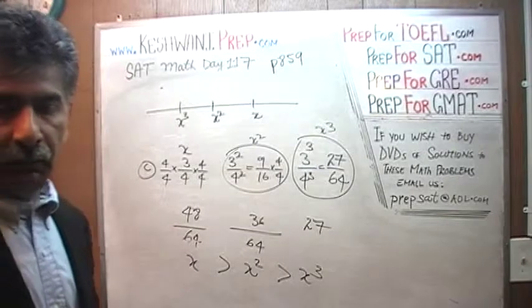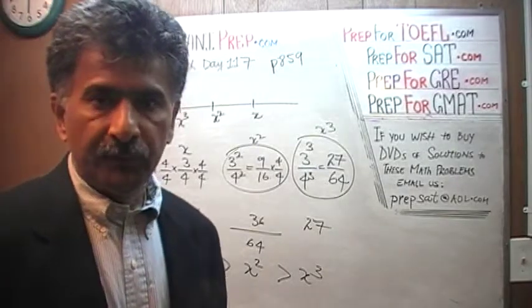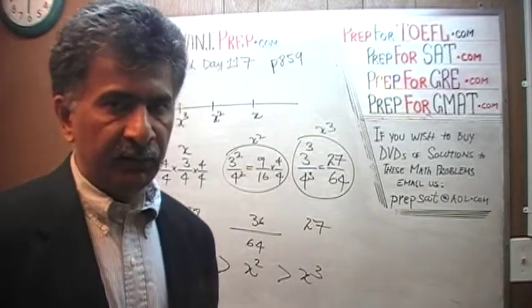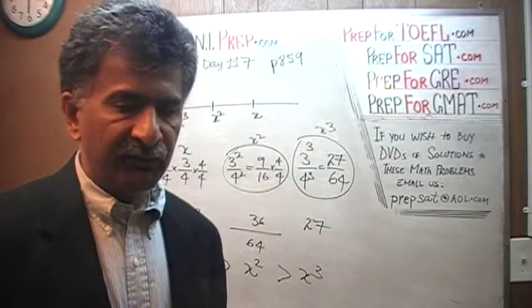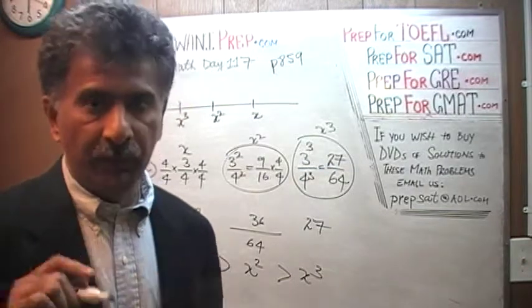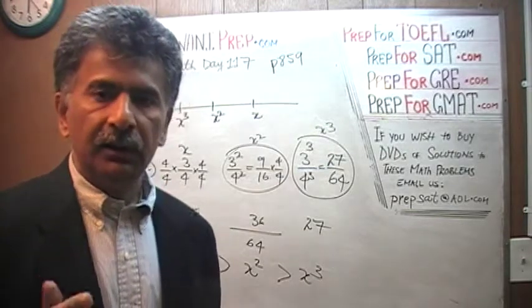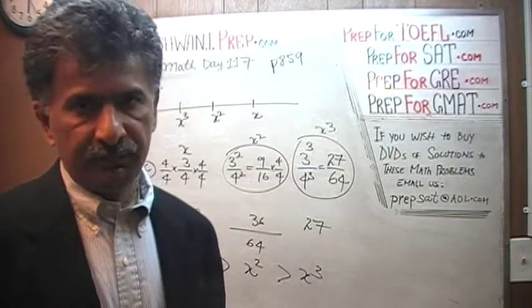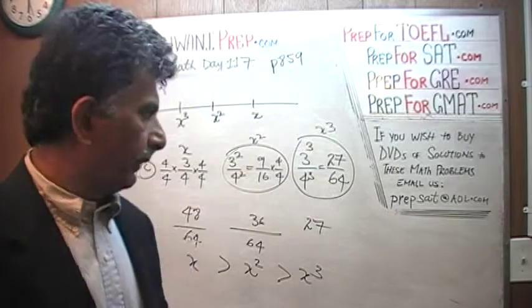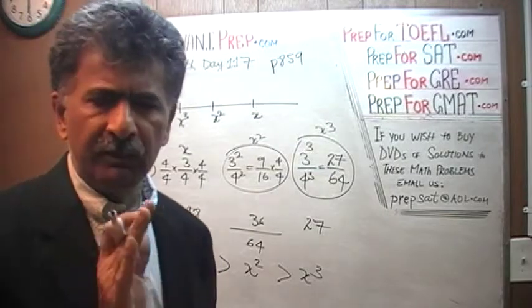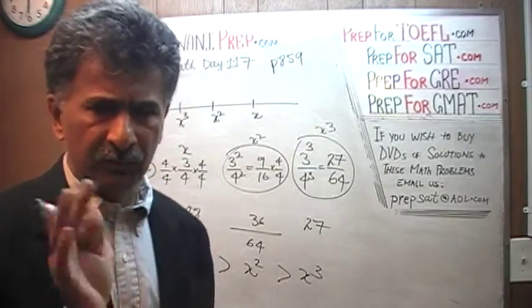Why? Because it's a fraction. It's less than 1. That's the only concept that they're trying to test here. When we have a fraction less than 1 between 0 and 1, if you square it, or if you raise it to a different power, it gets smaller.